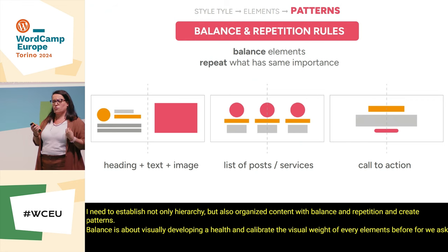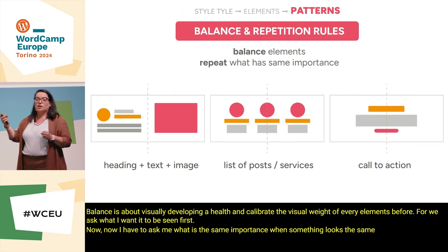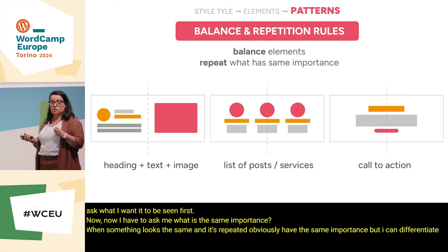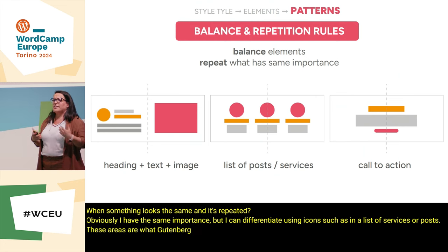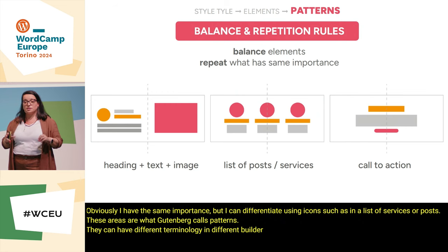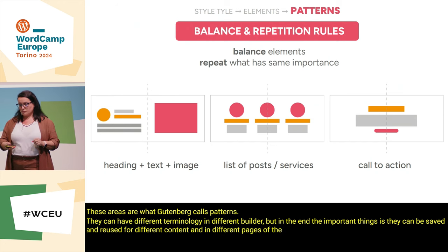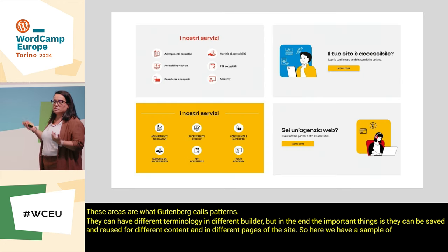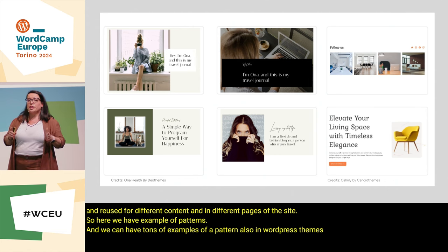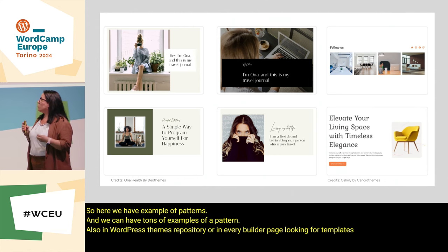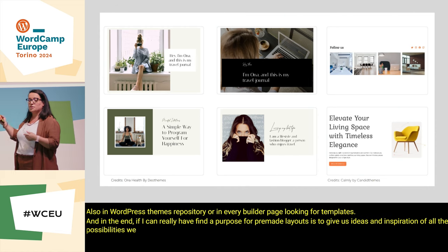Before we asked: what do I want to be seen first? Now I have to ask: what has the same importance? When something looks the same and is repeated, it obviously has the same importance — but I can differentiate using icons, such as in a list of services or posts. These areas are what Gutenberg calls patterns. They can have different terminology in different builders, but importantly they can be saved and reused for different content and in different pages of the site. We can find tons of examples of patterns in the WordPress themes repository or in every builder looking for templates. Pre-made layouts give us ideas and inspiration for all the possibilities we have to show and represent our information better.